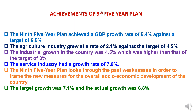The Ninth Five-Year Plan achieved a GDP growth rate of 5.4% against a target of 6.5%. The agriculture industry grew at a rate of 2.1% against the target of 4.2%. Industrial growth in the country was 4.5%, which was higher than the target of 3%. The service industry had a growth rate of 7.8%. The target growth was 7.1% and the actual growth was 6.8%.